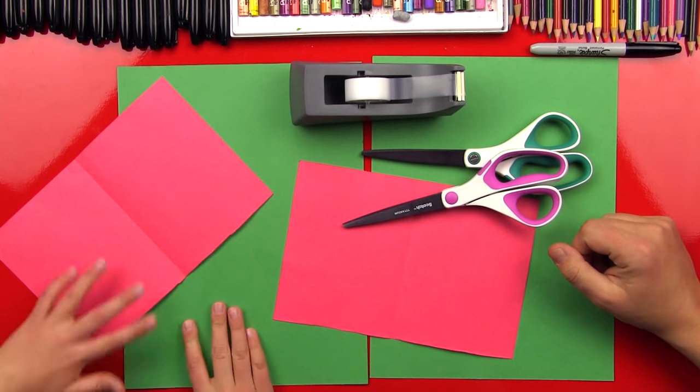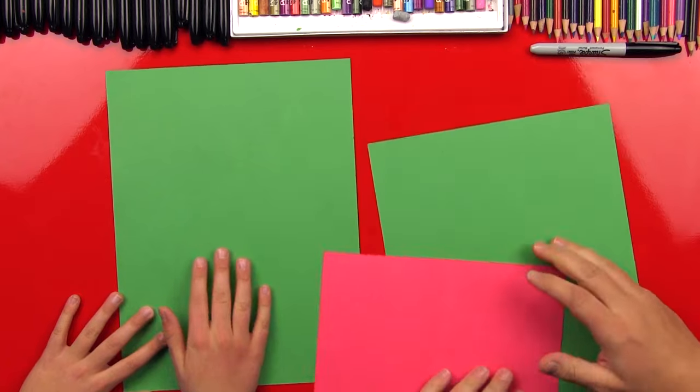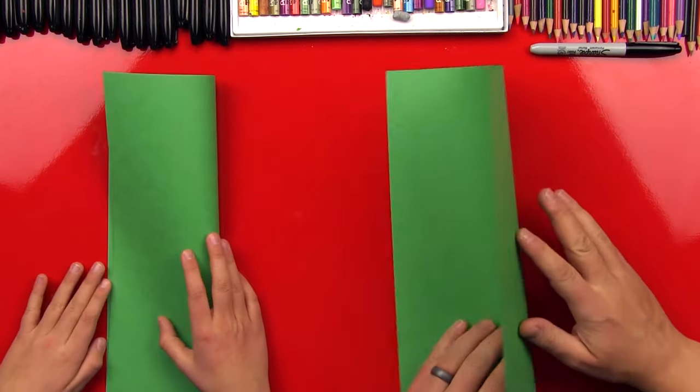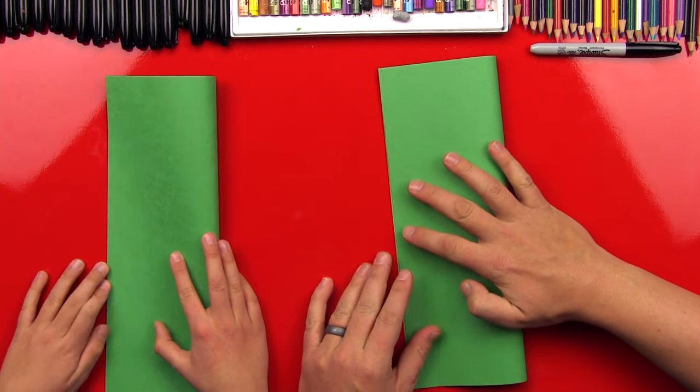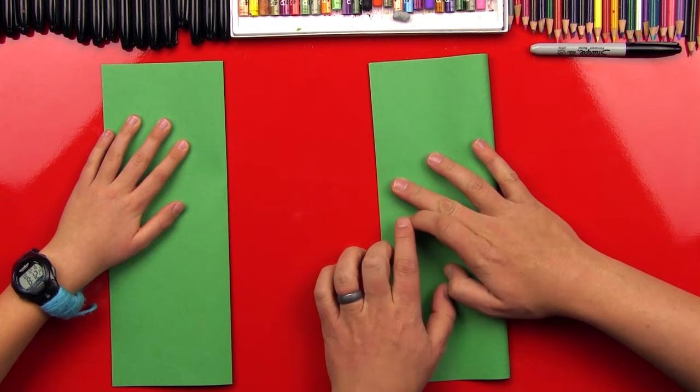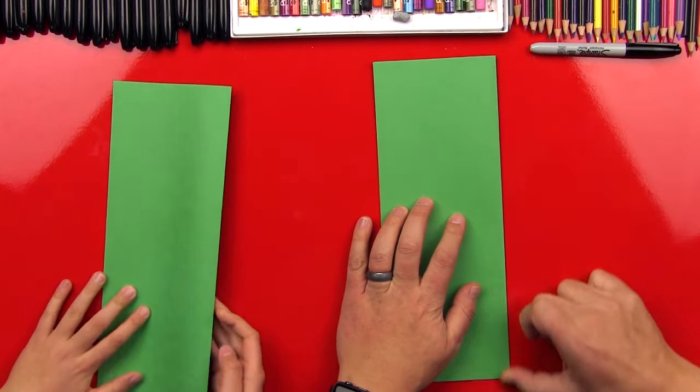Alright, truckers, what's the first step? We move everything to the side except the green paper. Alright, so we just need the green paper. Now what? You fold it hot dog style. Hot dog style, which means make it long. Long style. I forgot about hot dog style. Alright, hot dog style it is.